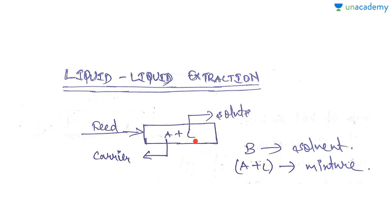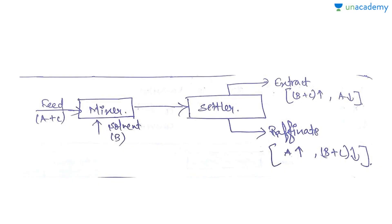We have a feed which is liquid in nature, then we supply it with a solvent B. Here A is the carrier and C is the solute. Remember, in this entire unit operation, barring some numericals where notations will be given according to the questions, A will be the carrier liquid, C will be the solute, and B will be the solvent.